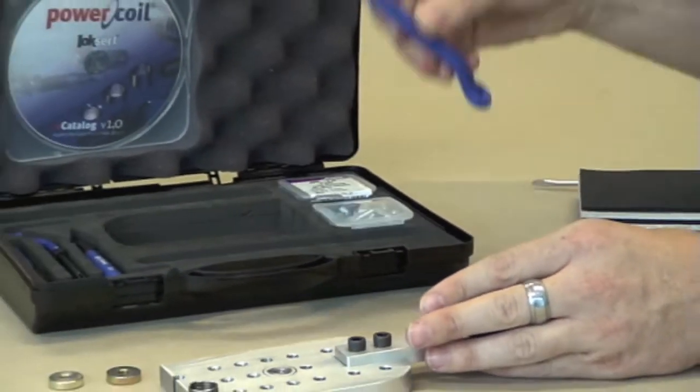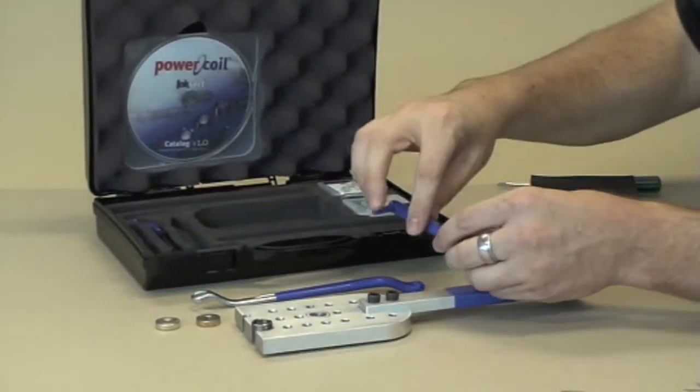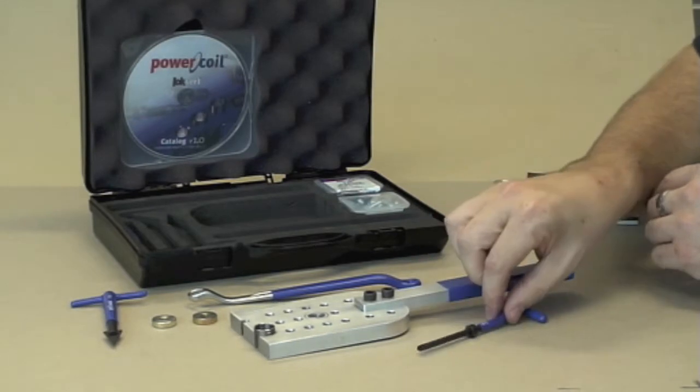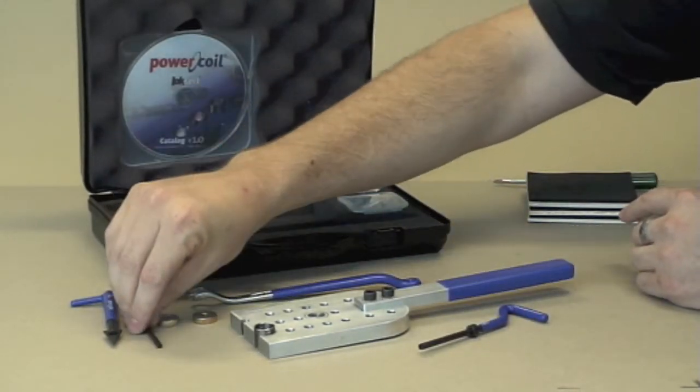Also in the kit we have a spanner, an extraction tool, an installation tool, and then the tang brake tool.